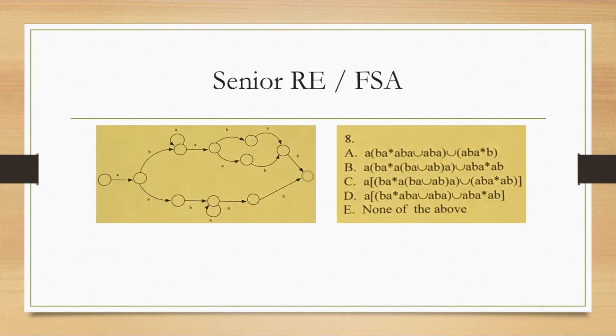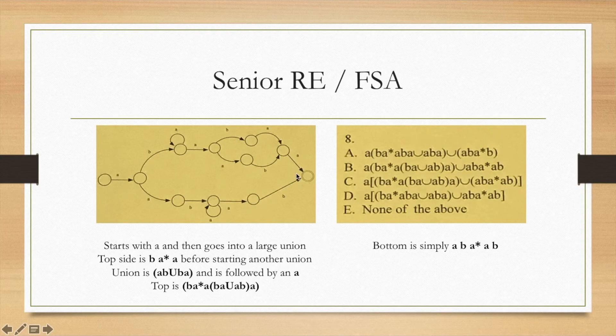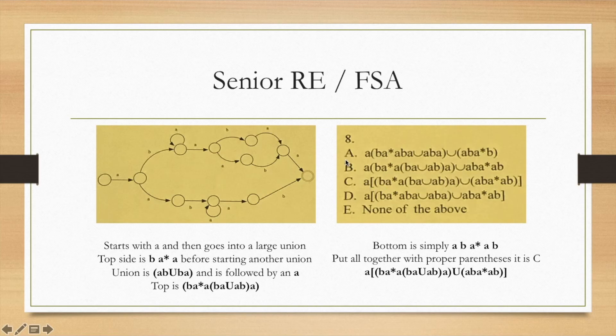Lastly, we've got: which of these expressions are equivalent? The expression will start with an A, then go into a large union, and this is going to go into another union after B A star A. That's reflected in each of these starting ones, but it's important to have the parentheses correct on these. Here, if you notice up top, the union will be, with that parentheses, A B union B A and then end with an A. So the top is going to be expressed: the top union B A star A, and then in the parentheses B A union A B and then A. The bottom is going to be A B A star A B, and then you need to get the correct notation with the brackets. So it's going to be C because it's B A star A union of B A and A B A, and that'll be in a union with A B A star A B.